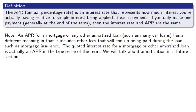One thing from the last example that was sort of hidden is something called the APR. The APR gives us a more true comparison for how much money we're actually paying in interest across various types of loans. The APR, also known as the annual percentage rate, is the amount of simple interest you'd really be paying on a yearly basis. It actually turns out that the APR is generally different from a quoted interest rate, though if you're only going to make one payment at the end, the APR is generally the same.